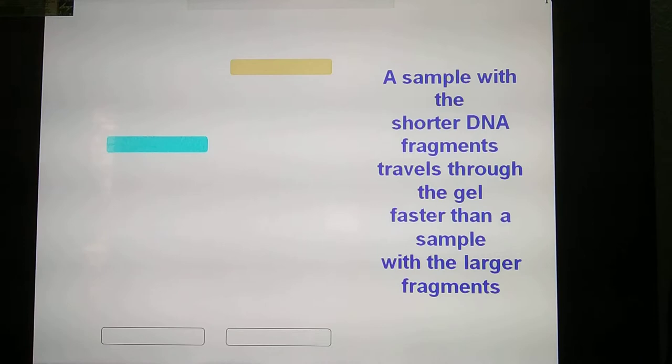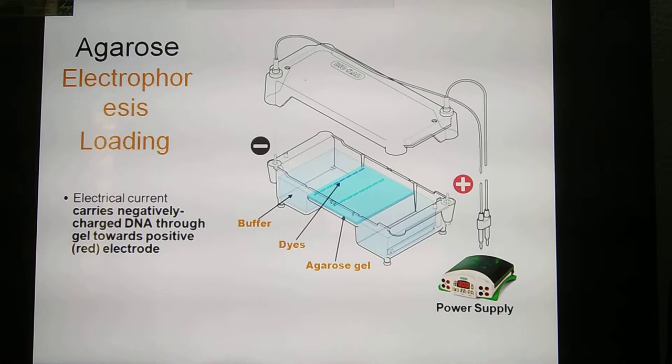Larger fragments travel slower, lighter fragments travel faster through the gel. Electrophoresis of DNA fragments is very important because of the electrical current supply from the power supply.